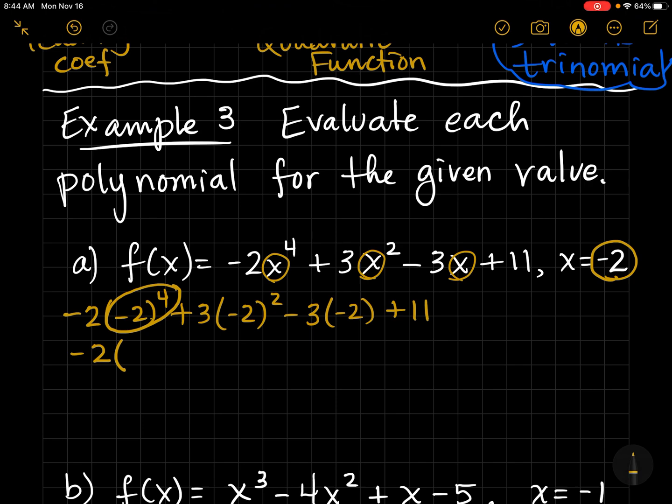So, negative two to the fourth power. You got to watch the sign. Negative two times negative two is positive four. And another negative two times another negative two. If you do those two, that's positive. See how the negatives cancel out and we just get 16 there. Whenever you have an even exponent, it makes the negative sign go away.